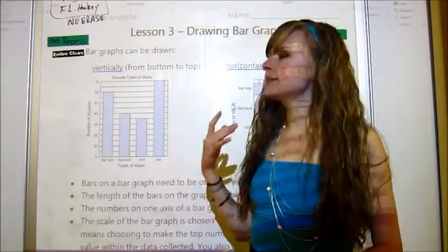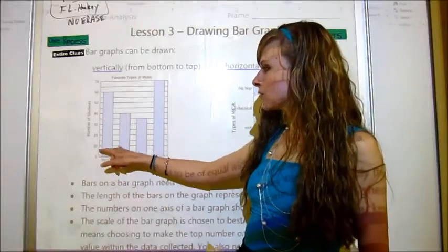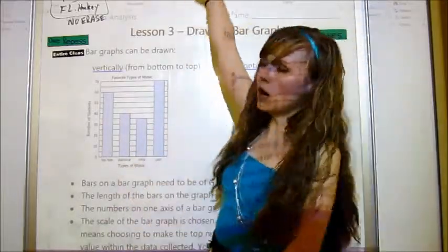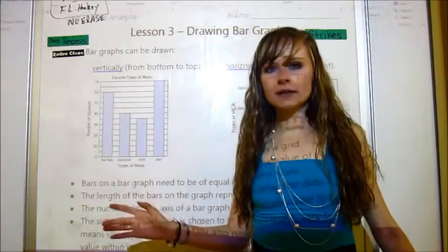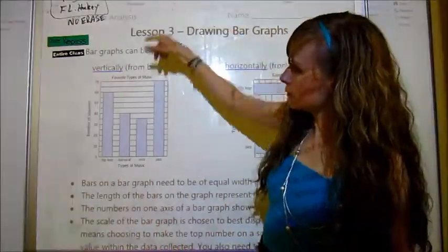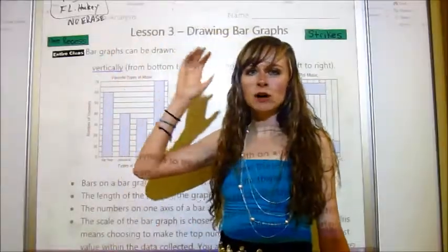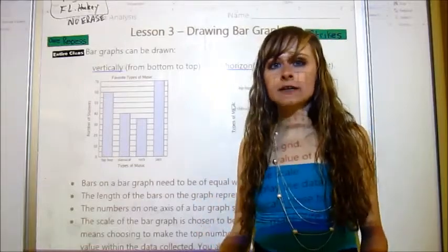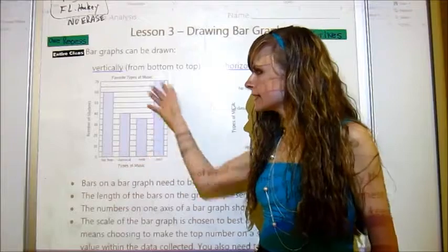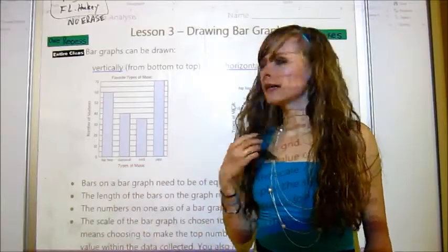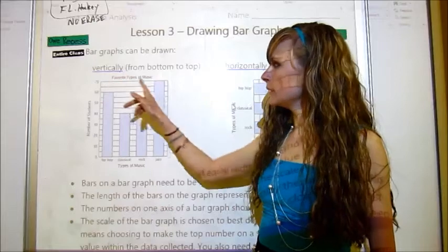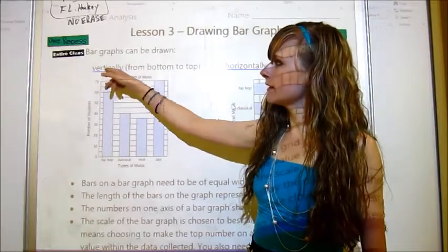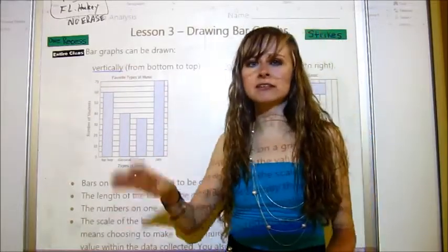Now, the second thing that you need to do is you need to choose a scale that makes sense. So if we made each one of these lines worth one, like it is over here, this would be an incredibly long bar graph. It would be way too large and hard to read because there'd be so many lines or it'd be so large. That's why we pick a scale and skip count by numbers larger than one, so that we can make it a small one and still readable.